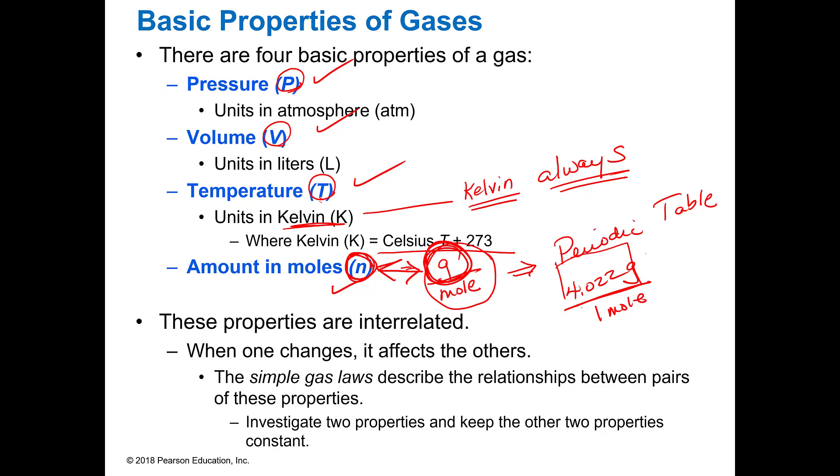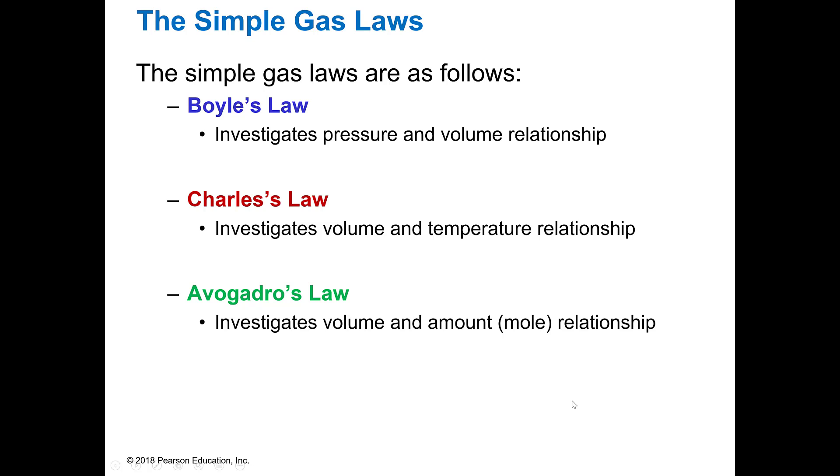These properties are related to each other. So if I change one of them, the other things are going to change. The simple gas laws describe the relationship between these different properties. And so typically what we do is we look at two properties and then we keep the other two things constant, so we can just isolate them and look at the effect that they have on each other.